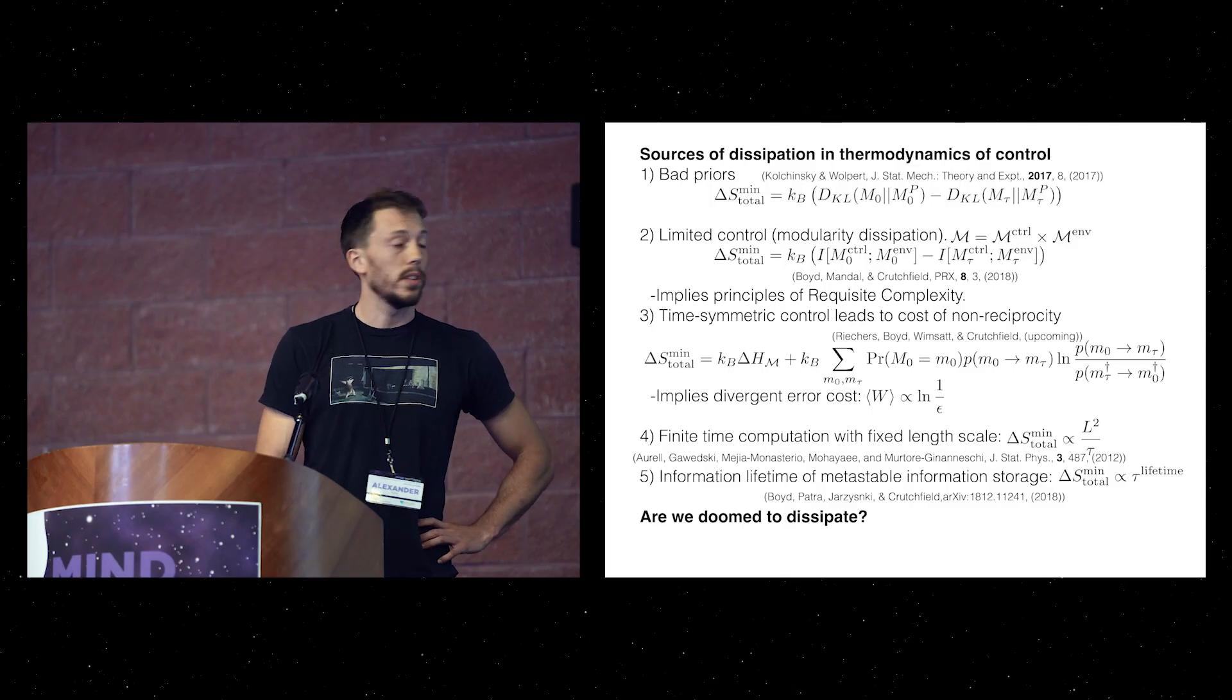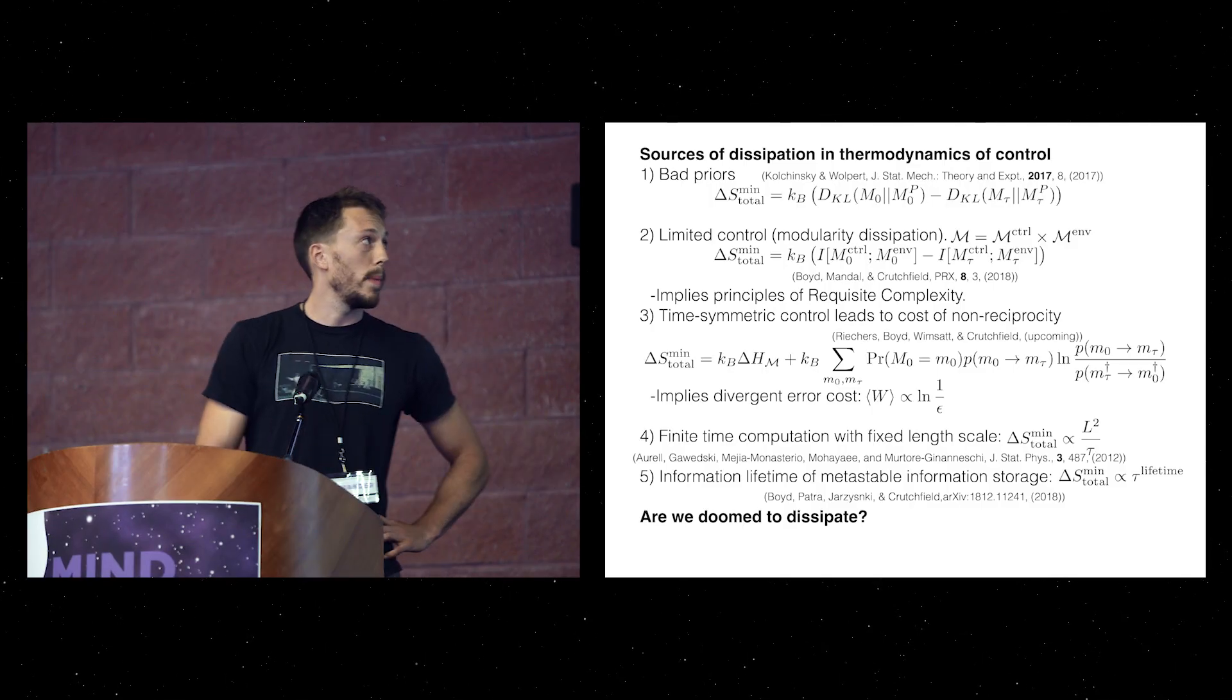This is the modularity dissipation, and it can be used to prove the principle of requisite complexity, which is that modular agents must match the complexity of their environment in order to be thermodynamically efficient. So this is another source of dissipation beyond the Landauer bound.